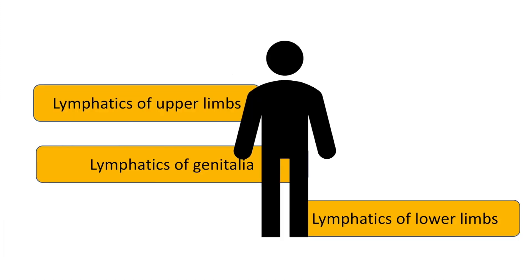These microfilariae and the adult worm reside in the lymphatics of the upper limbs, lymphatics of the genitalia, and the lymphatics of the lower limbs. The adult worm may cause blockage of these lymphatics, resulting in the protean manifestations of filariasis.